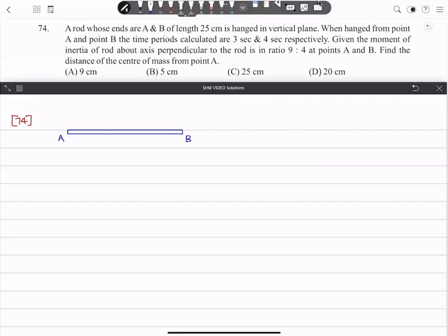Point A, point B - this rod's length is given as 25 centimeter, but this rod is not uniform. If it were uniform, then center of mass would be at the center. Let us assume that its center of mass is at distance x from point A, so from point B its distance will be 25 minus x.